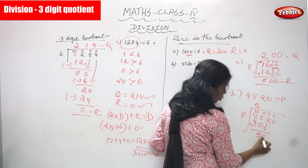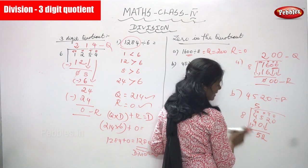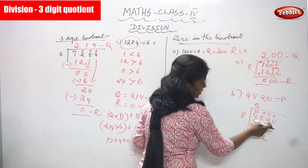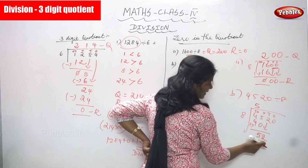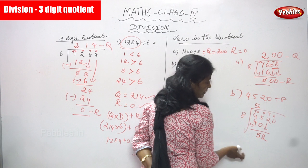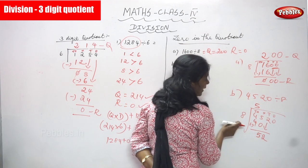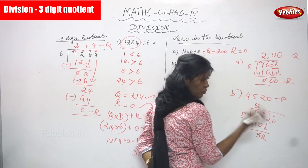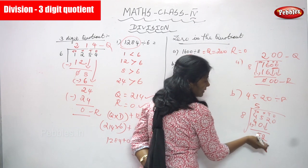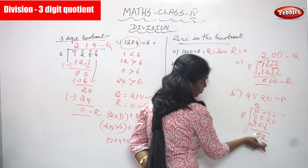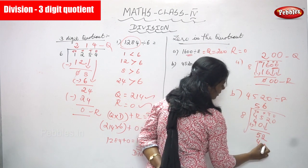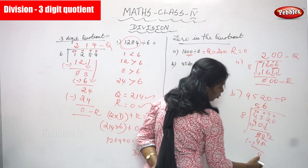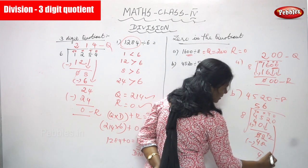Bring down the next digit 2, making it 52. Compare 5 and 8: 5 is less than 8, so bring down the tens place value 2 to get 52. In 52, how many times does 8 go? 8 sixes are 48; 8 sevens are 56 — 56 is too large. Write 48, which is closest to and less than 52. Subtract: 12 minus 8 equals 4, and 4 minus 4 equals 0.